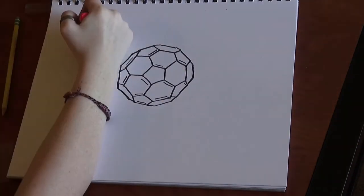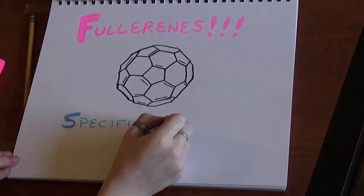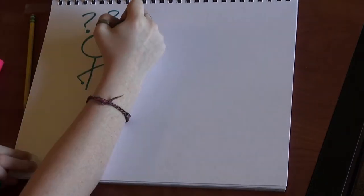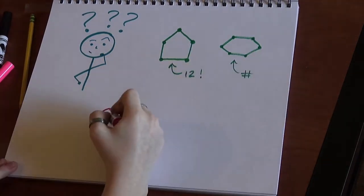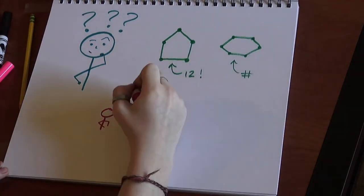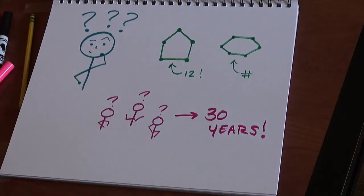I specifically study the fullerene C-84. What is a fullerene, you may ask? A fullerene is a molecule completely made up of carbon atoms into a spherical cage resembling a soccer ball. It has 12 pentagons and a number of hexagons, and has only been a topic of study for 30 years.